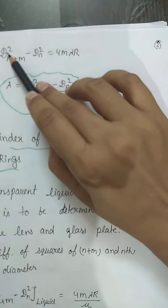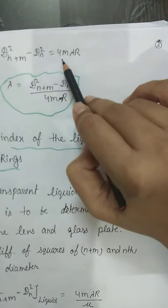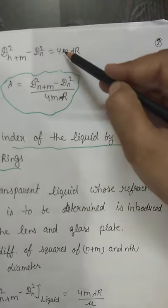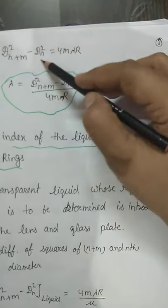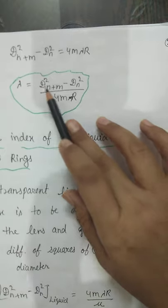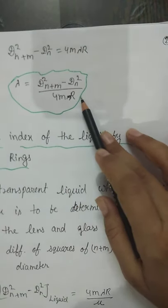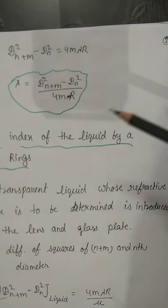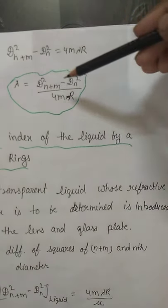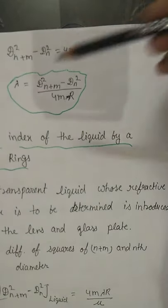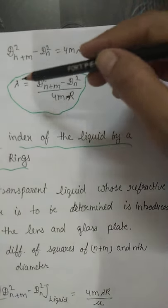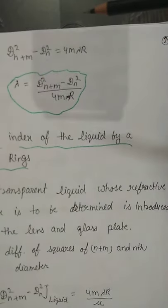Therefore, D_(n+m) squared minus D_n squared equals 4m × lambda × R. From this we can find the wavelength: lambda = (D_(n+m)² - D_n²) / (4mR). If we know the radius of curvature R, the diameter of the nth ring, and the diameter of the (n+m)th ring, we can find the wavelength of the monochromatic light source being used.